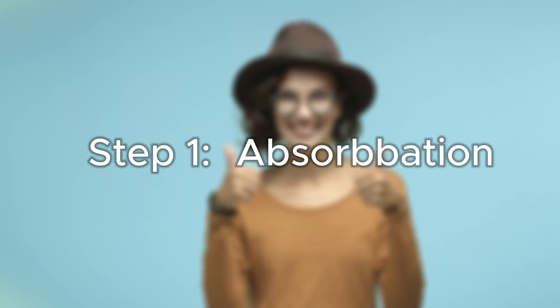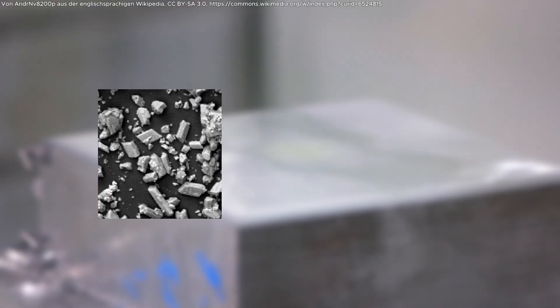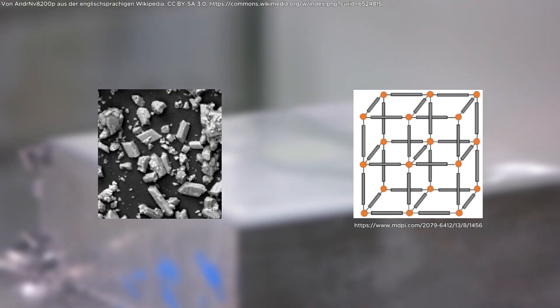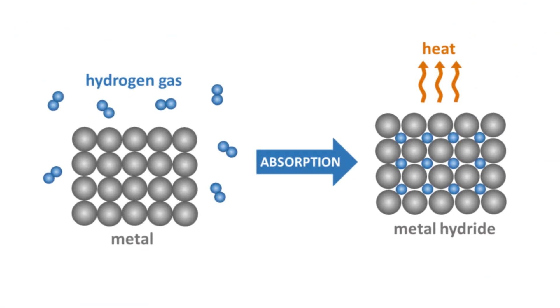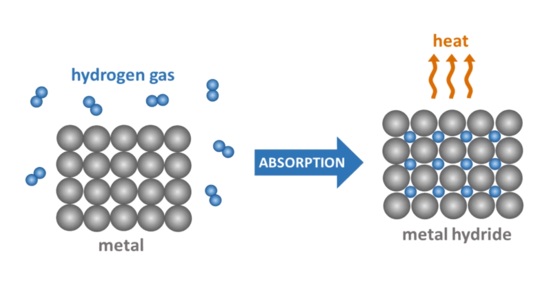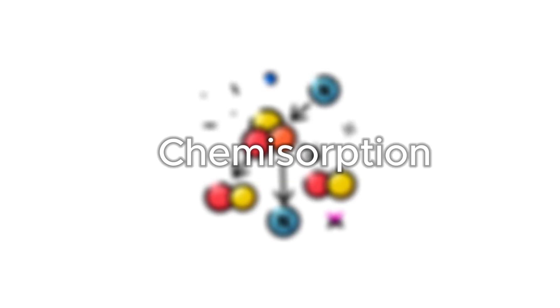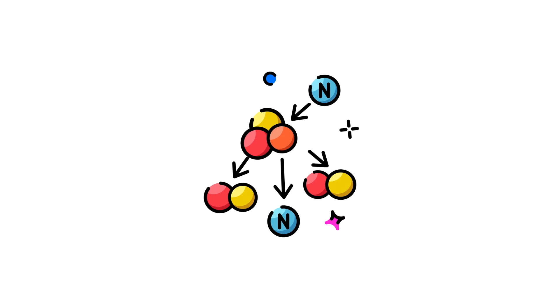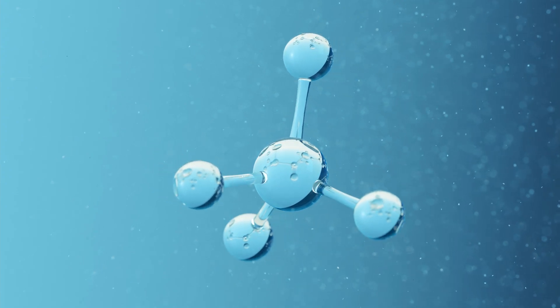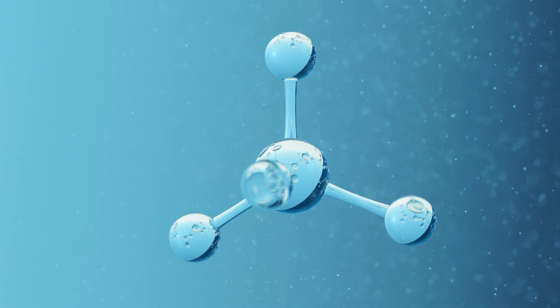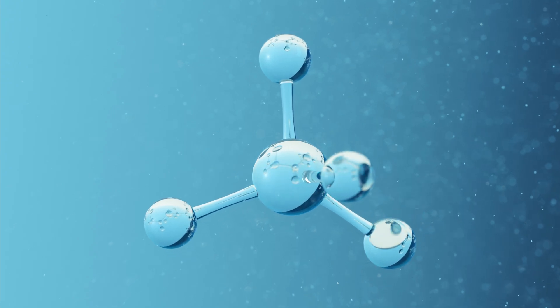Step 1. Absorption. Picture this. Hydrogen gas meets a solid material, let's say a metal hydride or a metal-organic framework. The hydrogen molecules don't just sit on the surface, they actually get pulled inside. Depending on the material, this can happen in two ways. Chemisorption: the hydrogen molecules split apart into individual atoms and form chemical bonds with the material. This is like building a really stable friendship. Strong, reliable, but it takes a bit of effort to break apart later.